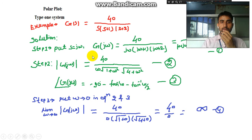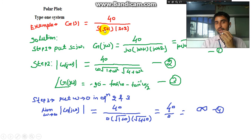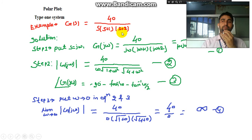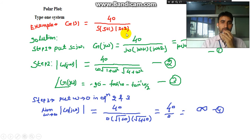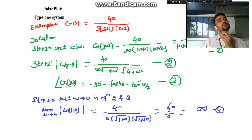For example, if we take G(s) = 40 / [s(s+1)(s+2)], this is a type 1 system with two time constants — (s+1) and (s+2). Keep in mind that for a type 1 system with two time constants, the polar plot will always cross the -180° axis. So you can be sure that it will always cross the -180° axis.